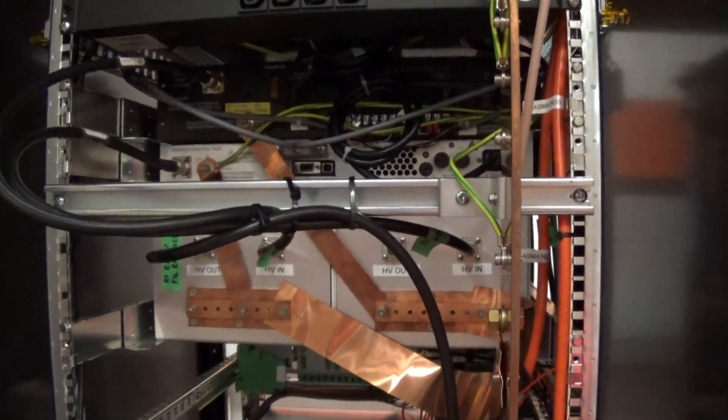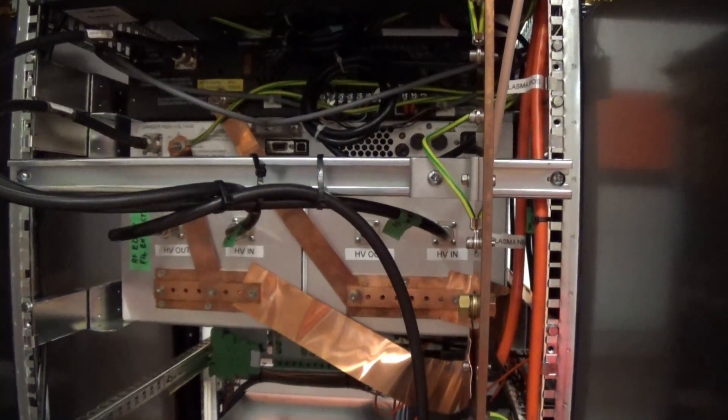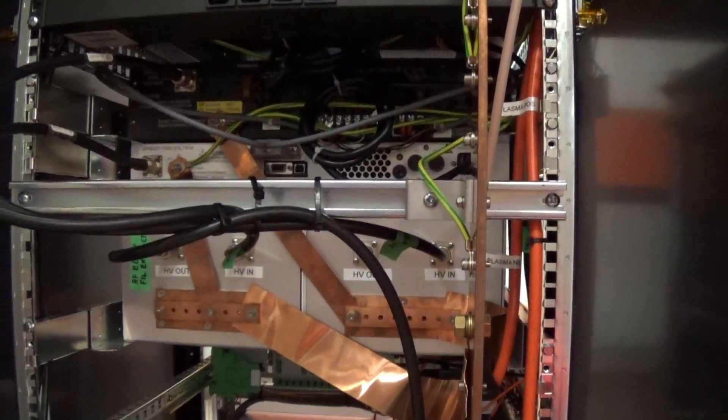Just above here are some more power supplies which are probably hard to see in the darkness here. And they're providing the high voltage for the lenses, the copper lenses that I showed you. That have the hole in the middle that the particles come out of.